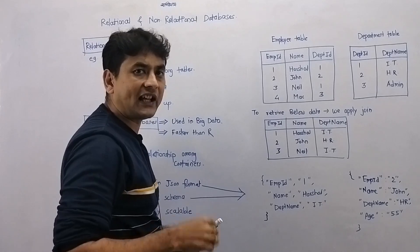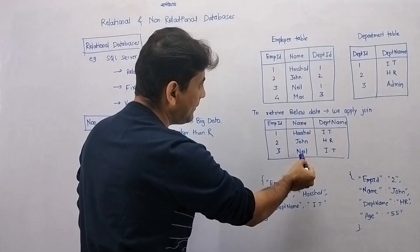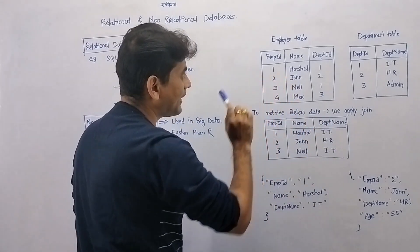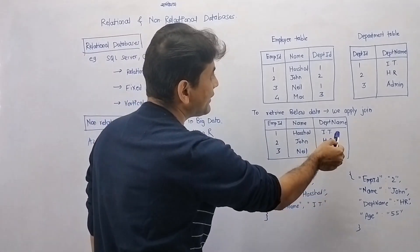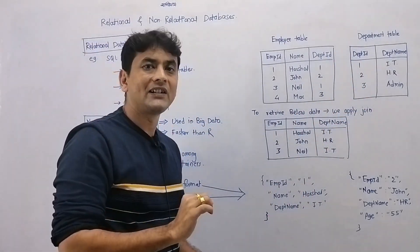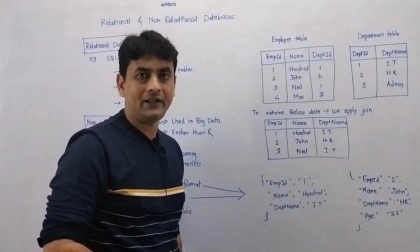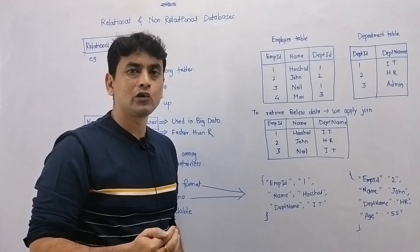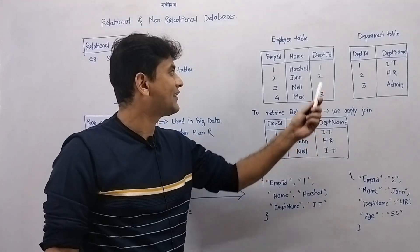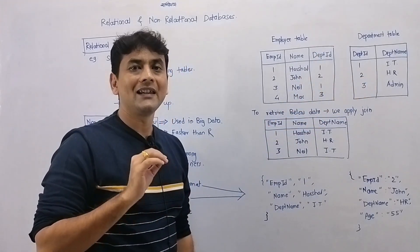Now let's assume we want to retrieve employee ID, name, and department name. Employee ID and name are in the employee table, and department name is in the department table. So to retrieve this data, we need to apply a join on the employee and department tables. We are able to apply the join because there is a relationship between them — the department ID column is common in both tables.